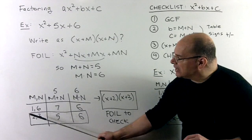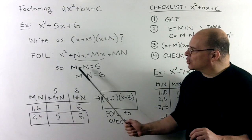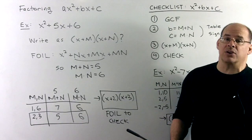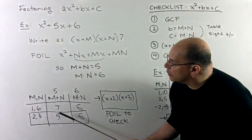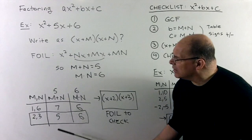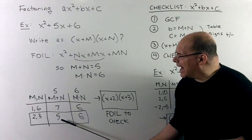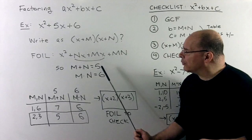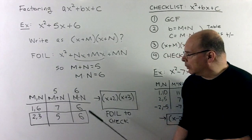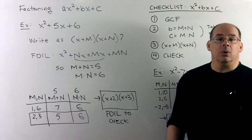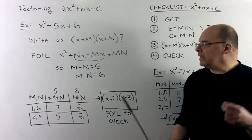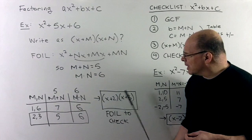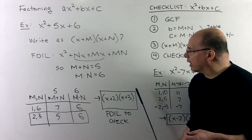Checking each case, we're looking for m plus n equal to 5. With 1 and 6, we get 7. With 2 and 3, we get 5. The 5 is what we're looking for, so 2 and 3 are what work. We take the 2 and 3 and drop them into x plus times x plus, giving us x plus 2 times x plus 3.